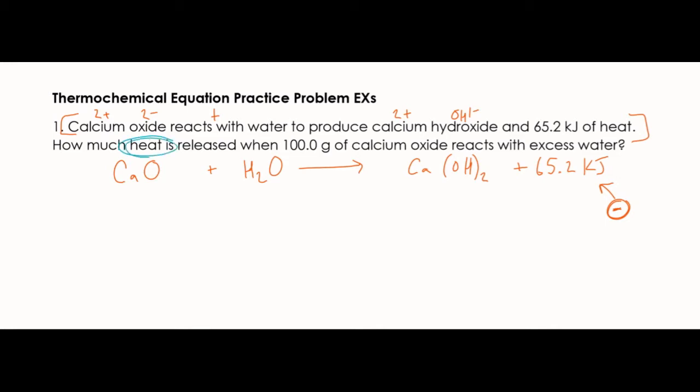Let's look at the actual question. It wants to know how much heat is released, so we're looking for kilojoules. And it gives us 100 grams of calcium oxide. So we're going to start with that number the question gives us, 100 grams of calcium oxide.